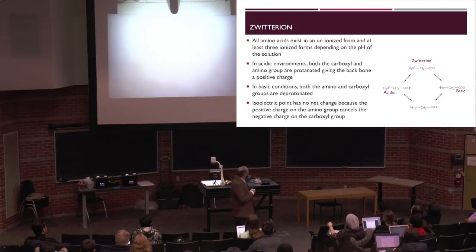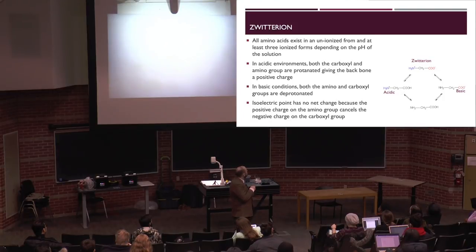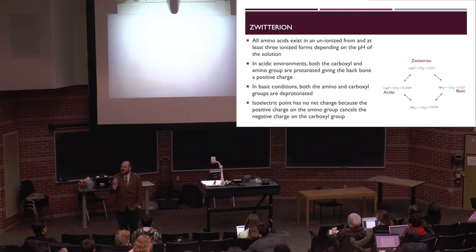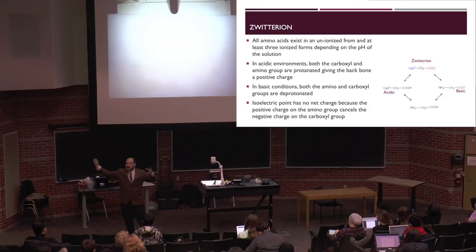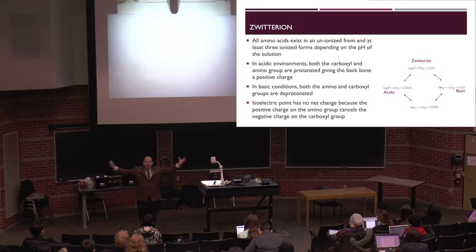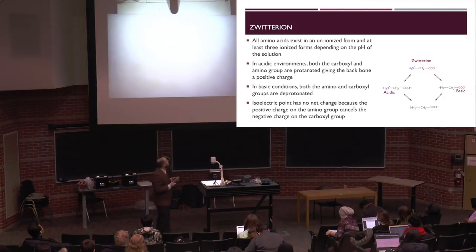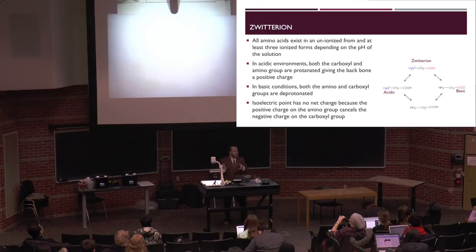A typical amino acid in a basic environment can deprotonate; in an acidic environment it can become protonated. A zwitterion forms at a very specific pH — at its isoelectric point. Solubility plummets at the isoelectric point because there's a positive charge on one end and a negative charge on the other. That causes an attraction between proteins and gelation. All amino acids and proteins have that zwitterionic characteristic, and the isoelectric point varies for every protein depending on its side chains.